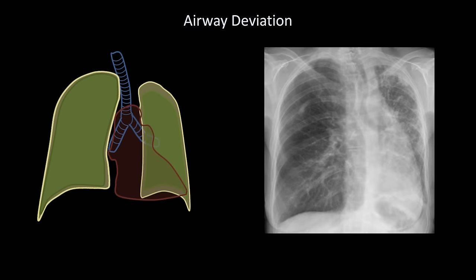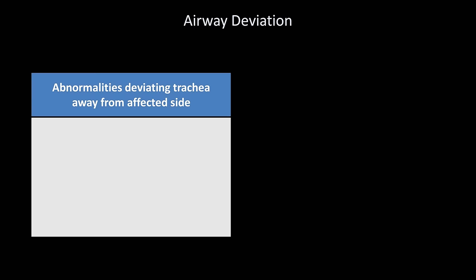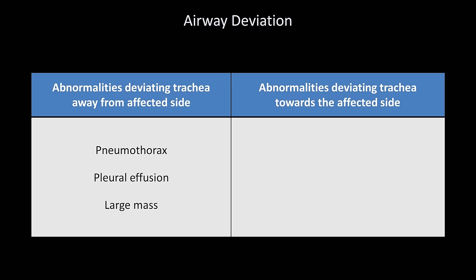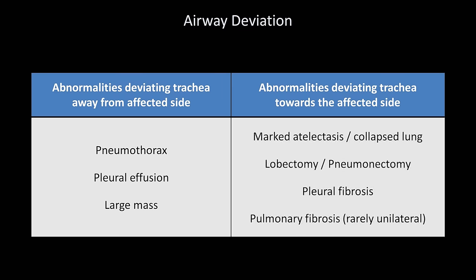Unilateral fibrotic lungs are quite rare. In this particular example, the patient actually had bilateral pulmonary fibrosis, but was status post right lung transplant. Abnormalities deviating the trachea away from the affected side include pneumothorax, pleural effusion, and an extremely large mass. Those deviating the trachea towards the affected side include marked atelectasis or collapsed lung, lobectomy or pneumonectomy, pleural fibrosis, or pulmonary fibrosis.